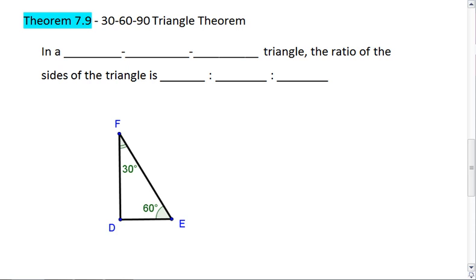Theorem 7.9 is our 30-60-90 triangle theorem. This theorem tells us that in a 30-60-90 triangle, a triangle that has angles of 30 degrees, 60 degrees, and 90 degrees,